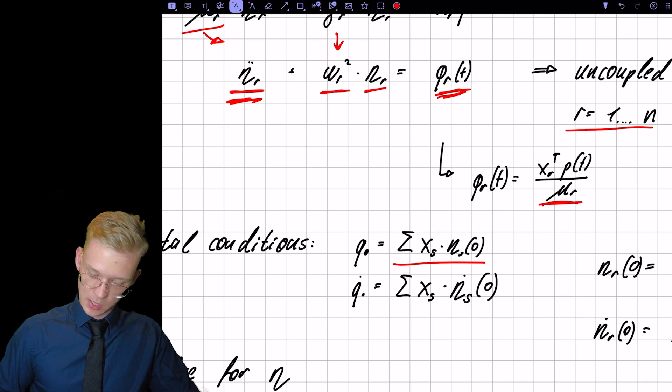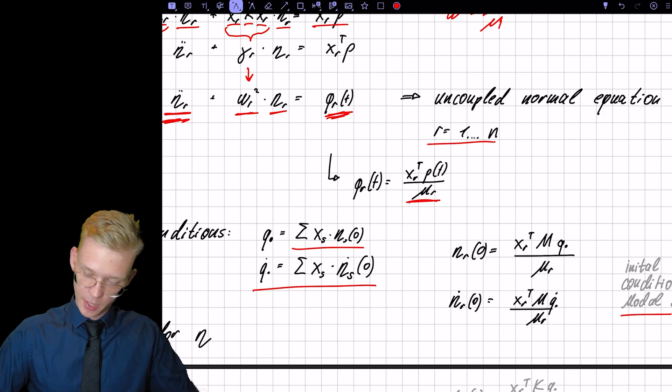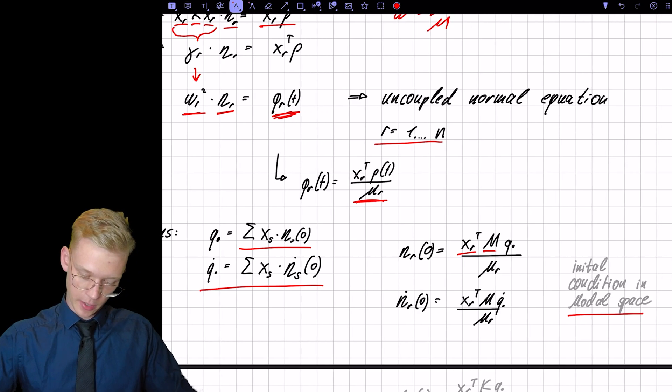So this is our equation for the initial conditions. And now we have to pre-multiply with M and pre-multiply with XR transpose. So let me write it out.